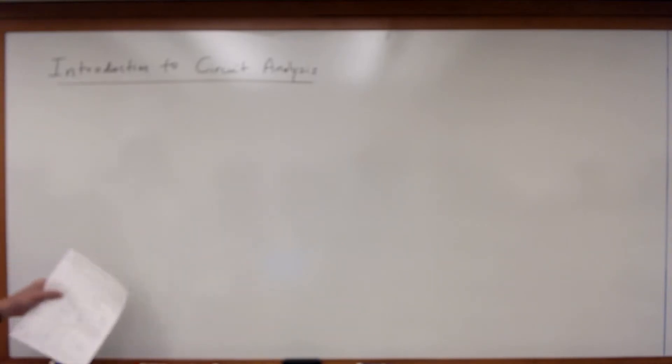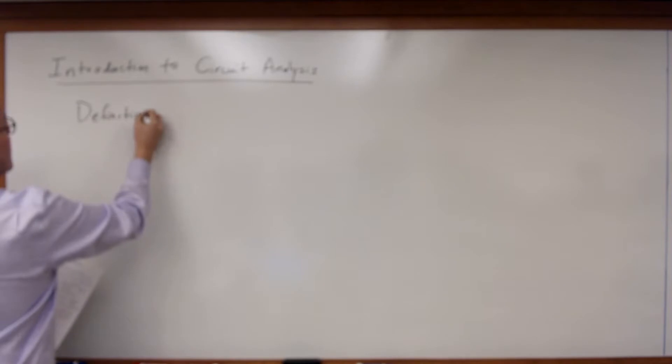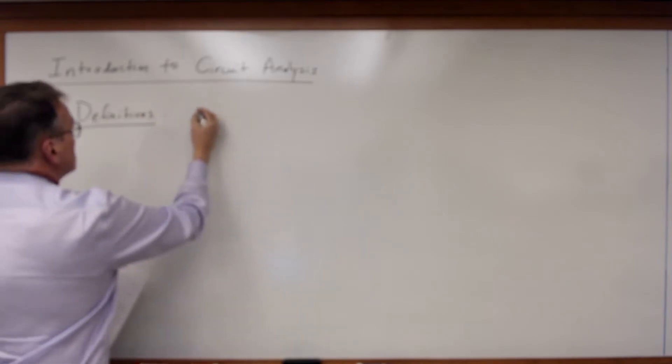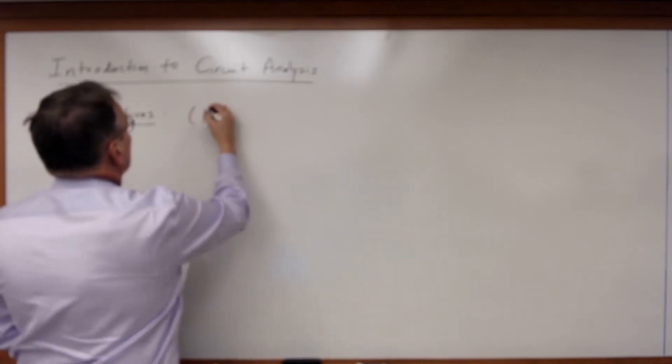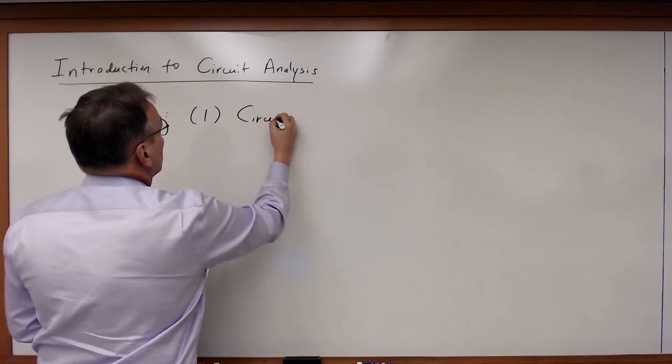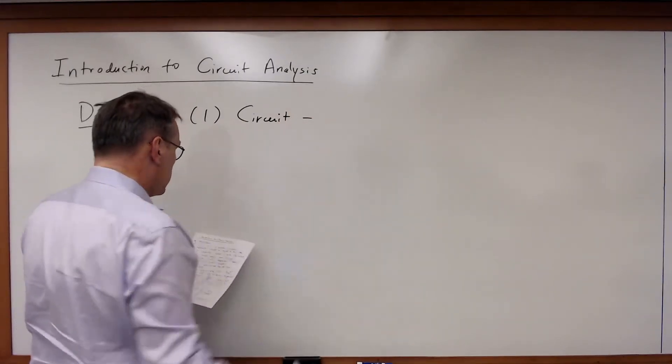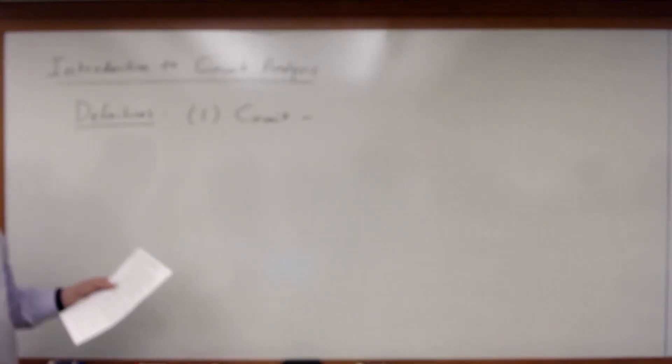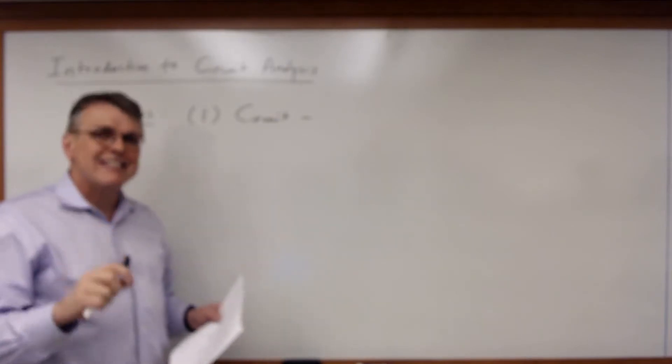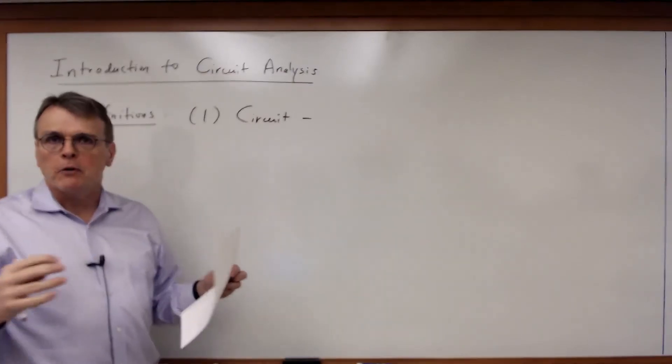So let's begin first by talking about what a circuit is. Some basic definitions. First of all, a circuit is a system of electrical components that are connected or coupled together.